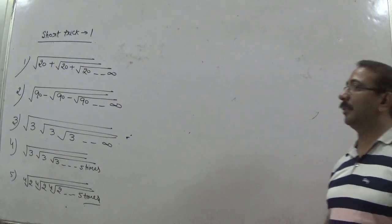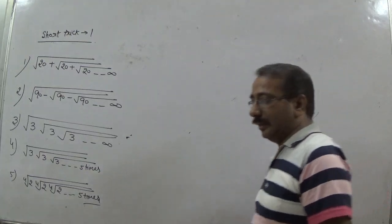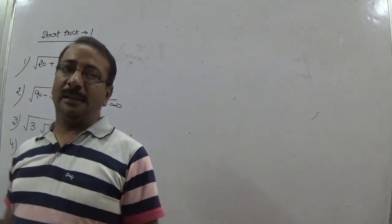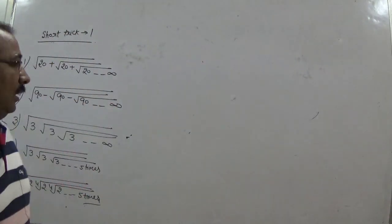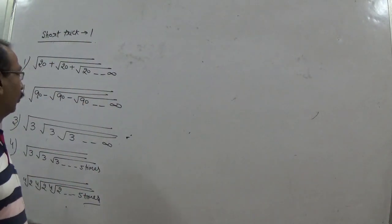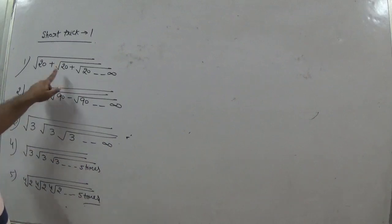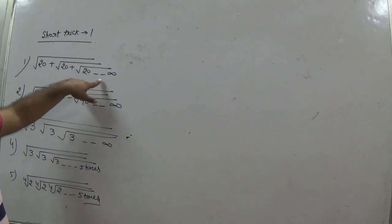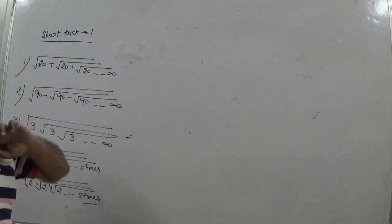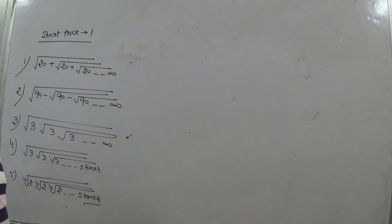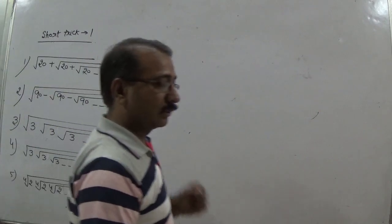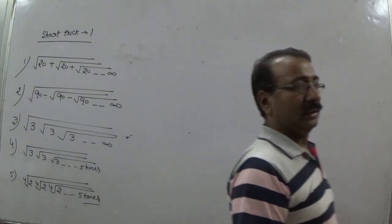The first type of question is based on the infinite series. For example: root 20 plus root 20 plus root 20, going up to infinity. This is the basic type of question.